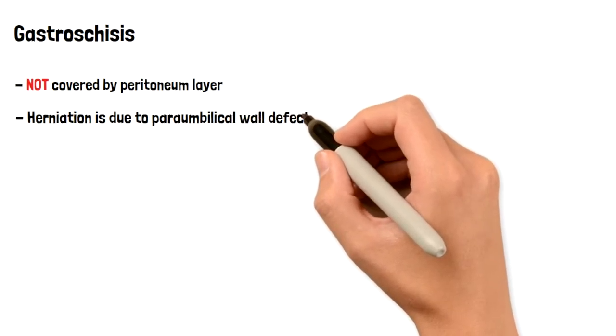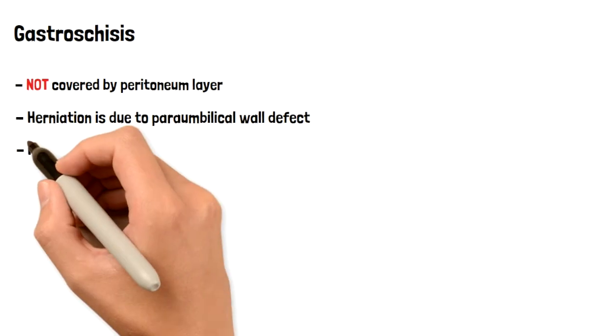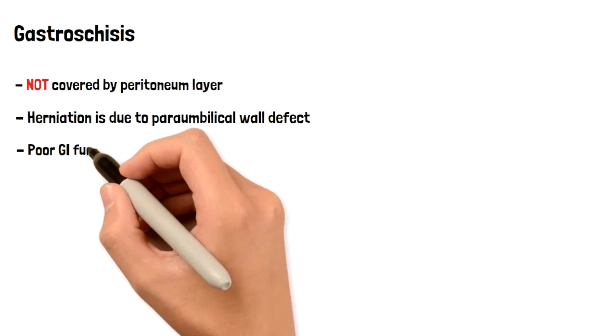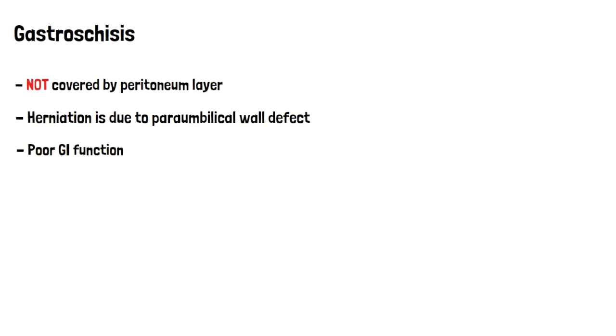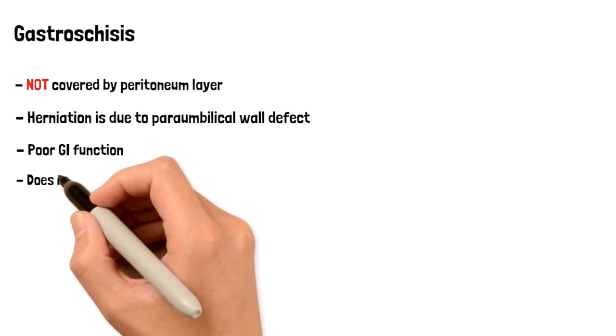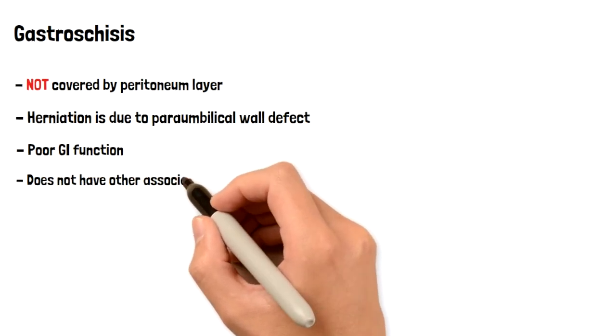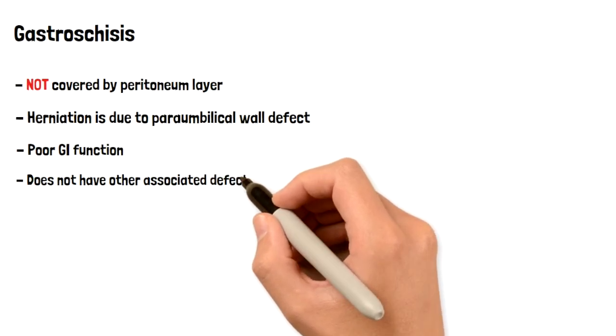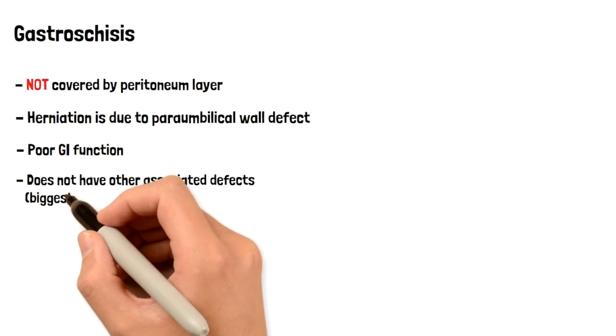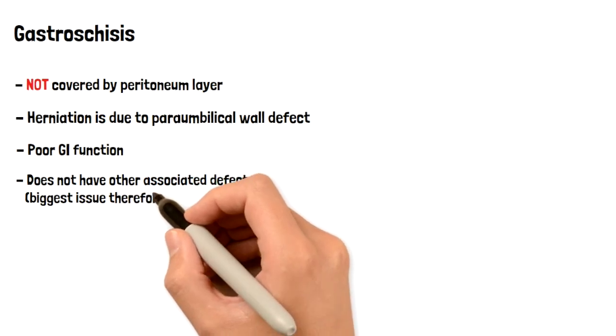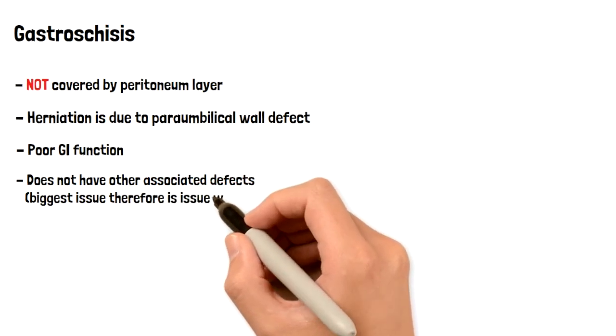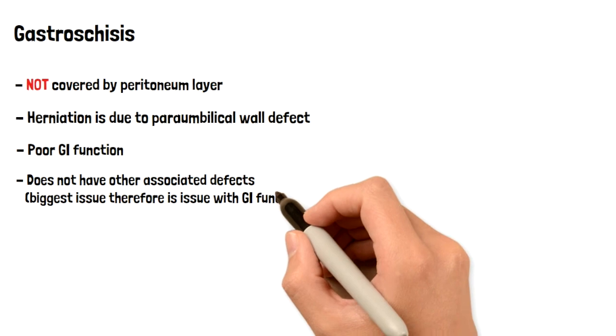Now in gastroschisis, GI function is problematic. There's usually an issue with it. In gastroschisis, there are no other defects that come along with it. So if you have a patient who has this, it's usually this problem by itself that they have. And in this gastroschisis, the issue is GI function, so once you surgically fix that, you'll be fine.